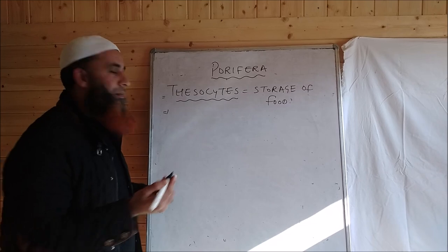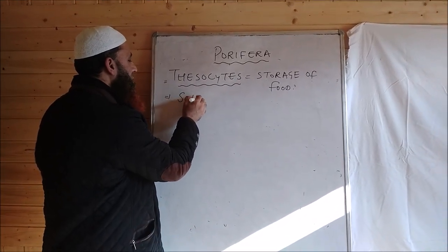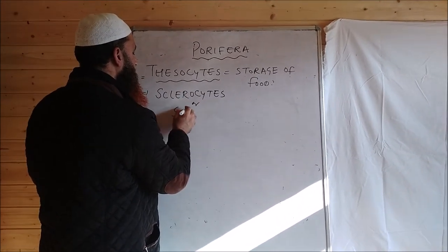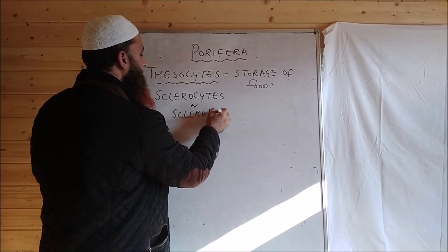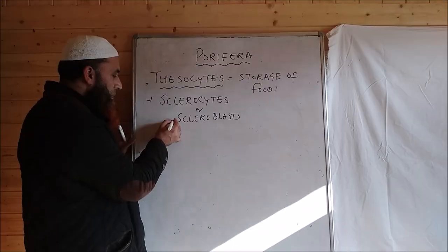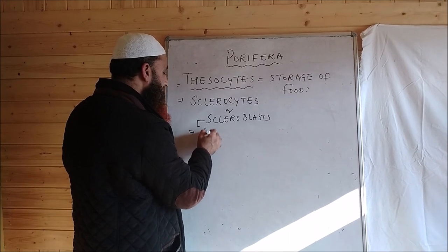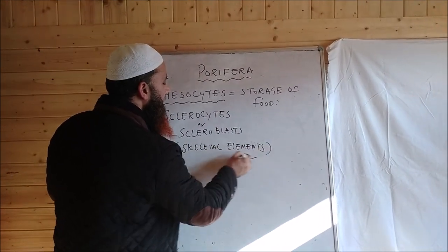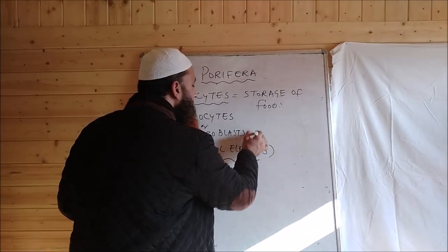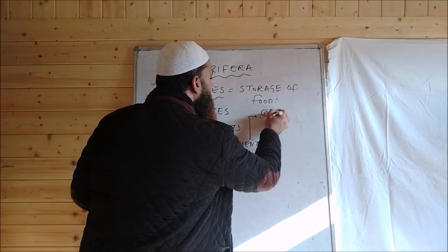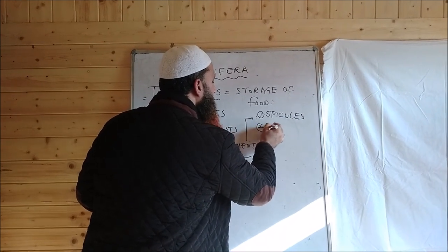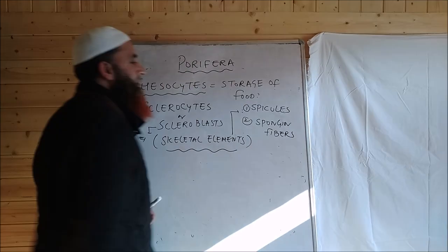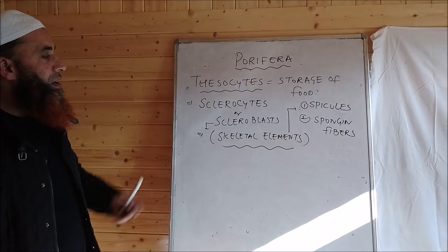Another important cell found in sponges is known as sclerocytes, also called scleroblasts. These cells form the skeletal elements of sponges. Skeletal elements are in the form of needle-like structures called spicules, and may also include a substance known as spongin fibers. These are the skeletal elements of sponges.